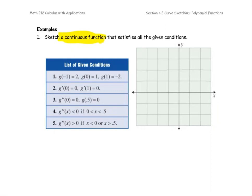The first condition: g at negative 1 is 2, so we get the ordered pair negative 1 comma 2. g at 0 equals 1, ordered pair 0 comma 1. g at 1 is negative 2, we get the ordered pair 1 comma negative 2.